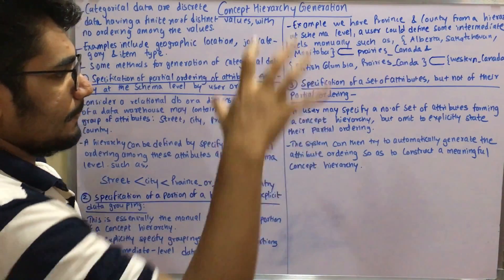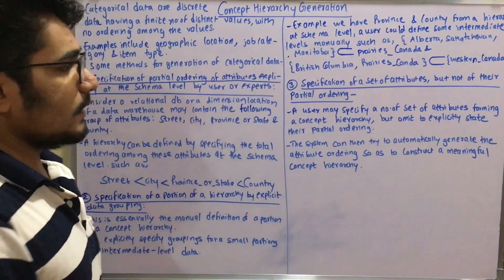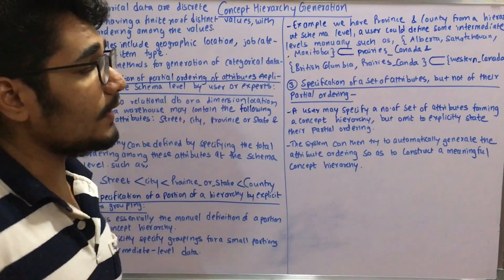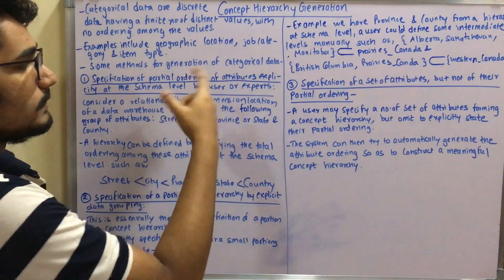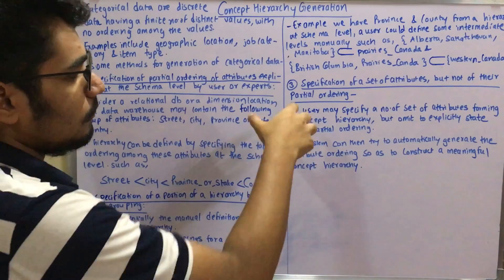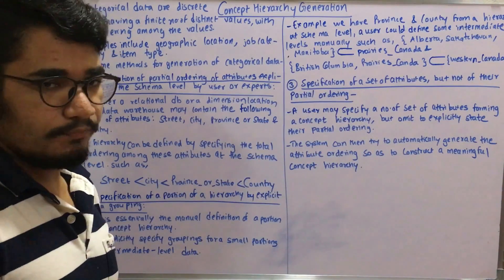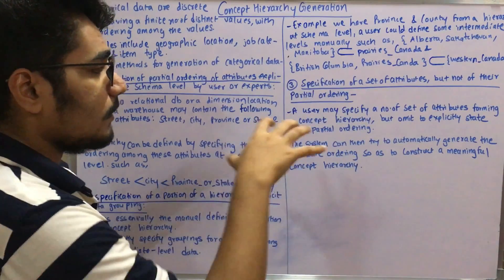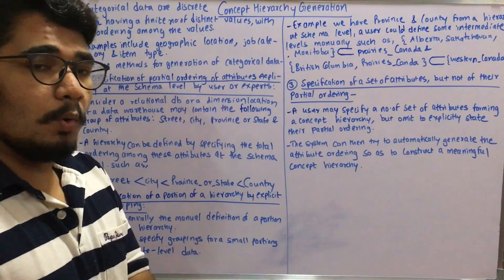In order to have automatic generation, you have specification of a set of attributes but not of their partial ordering. In the first method you have partial ordering, but in this you don't have any partial ordering.